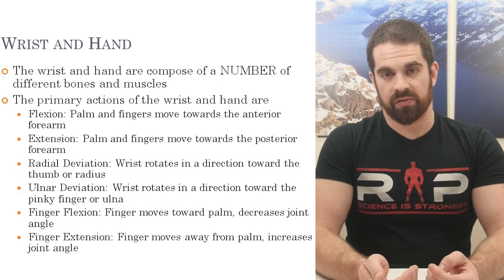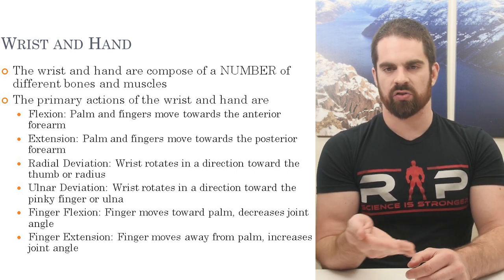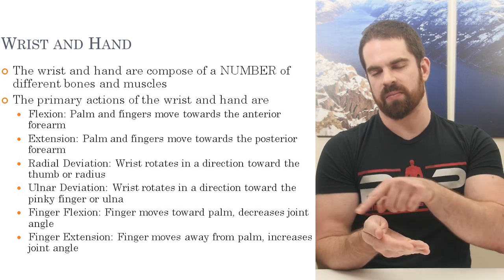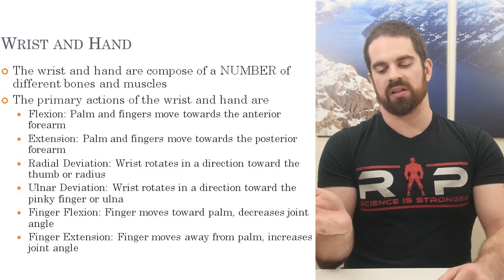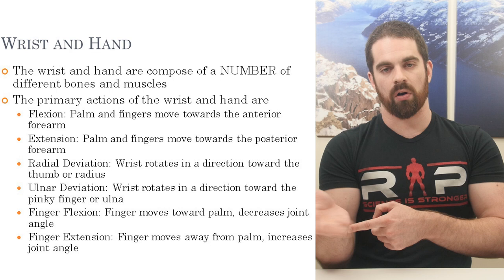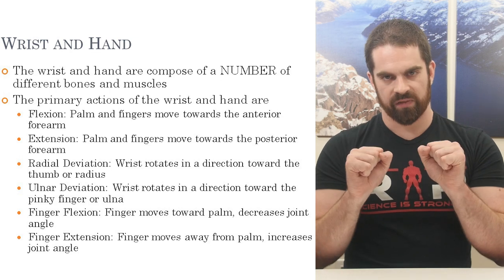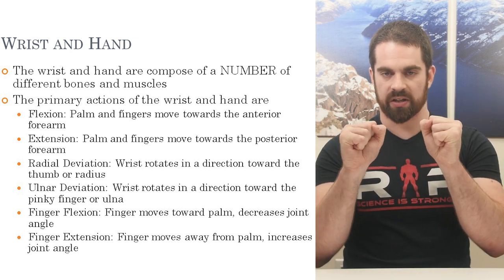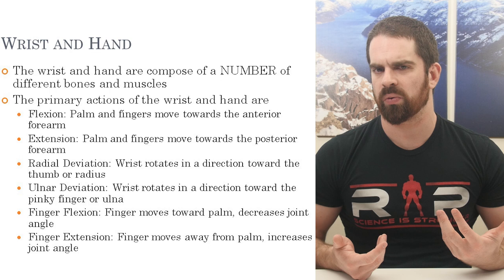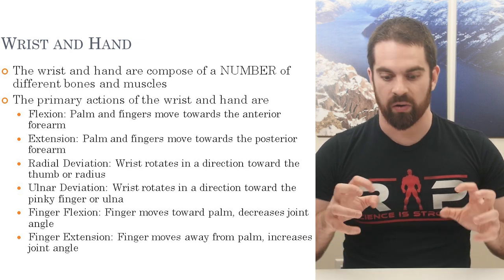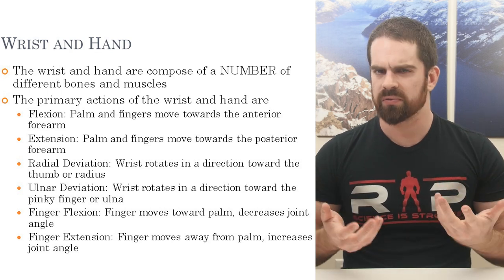We can also see radial deviation — an abduction-type movement where the hand moves towards the thumb, closing the distance between the thumb and the forearm. Ulnar deviation is the opposite: moving the pinky finger towards the forearm. Then we have finger flexion — causing the fingers to close — and finger extension, where you forcibly open the fingers. Hopefully these are things we know intuitively from day-to-day life.